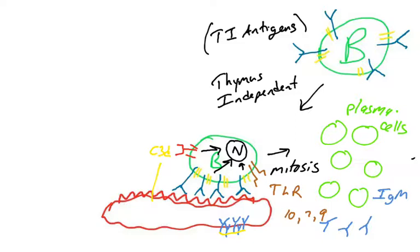That's a thymus-independent response. You'll notice the response only produced IgM, and we didn't see any isotype switching, any affinity maturation, and that's because those events don't occur when thymus-independent antigens produce antibodies.